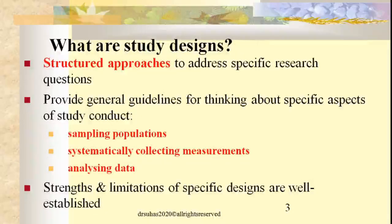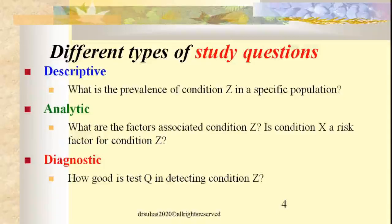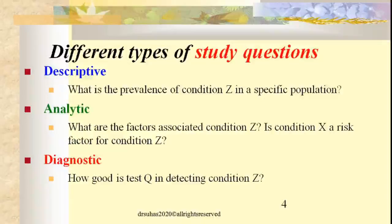Each study design has its own advantages and disadvantages, and the strengths and limitations of specific designs are well established. Based on different types of study questions, there are different study designs. For a descriptive study design, the question would be: what is the prevalence of condition Z in a specific population? For example, how many people are suffering with diabetes? Prevalence and incidence rates are gathered through various studies based on these research designs.